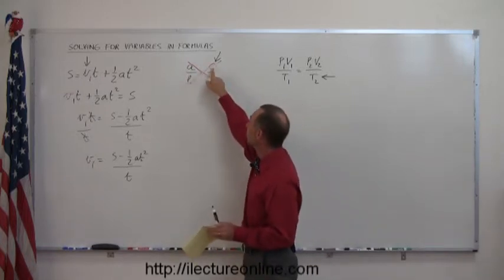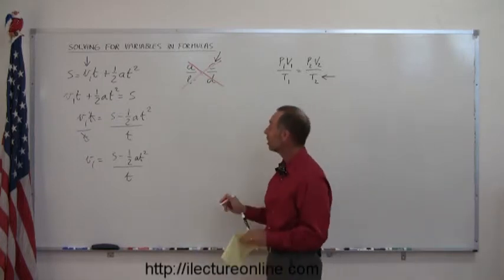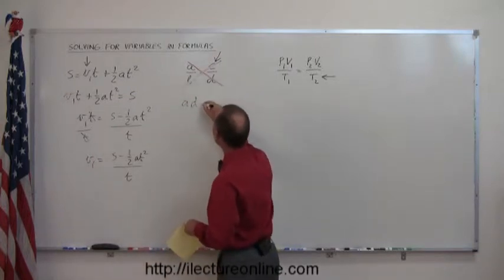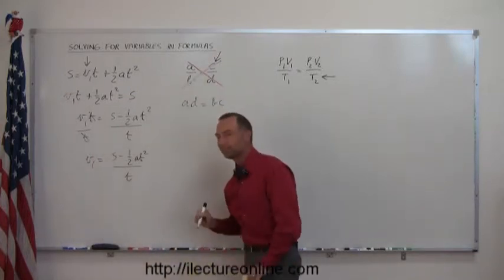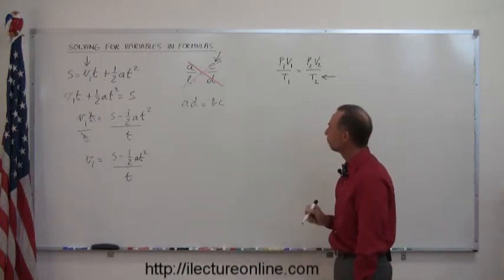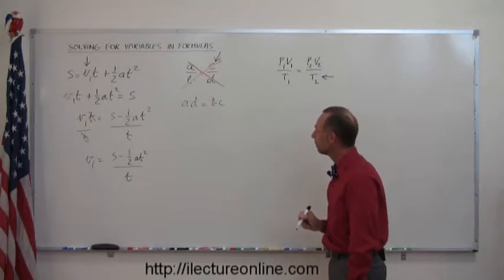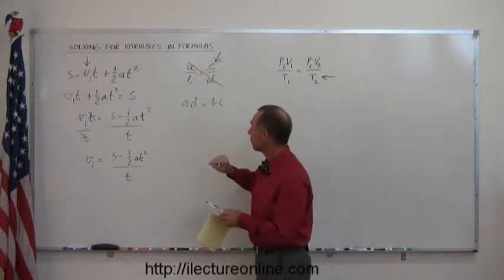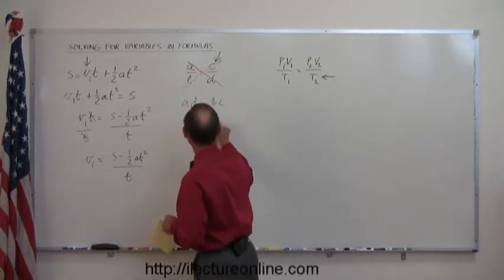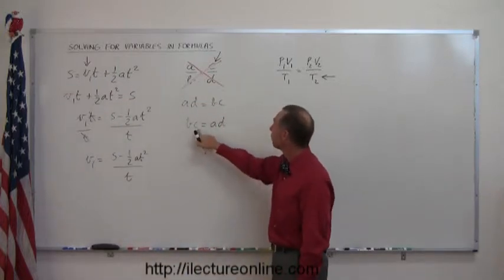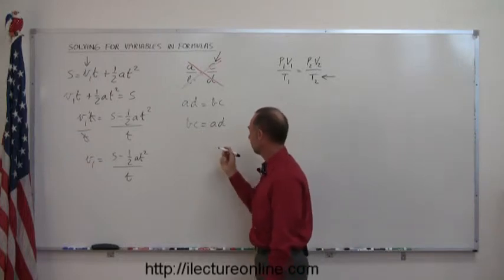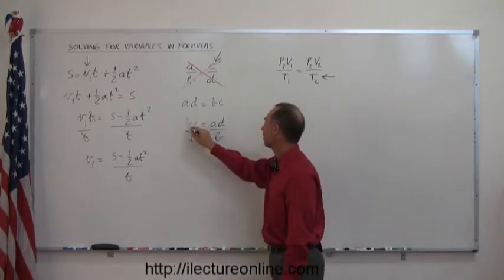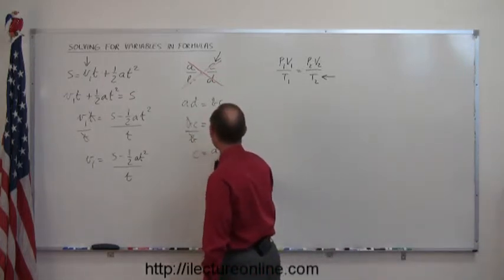I can move the d over here, I can move the c down there, I can move the b down there and nothing has changed. So I can write this as a times d by moving the d over here equals b times c. Now since I'm looking for c and it's now on the right side, I can flip the equation around and write this as bc equals a times d. The last step, since I'm looking for c, I divide both sides by b and now I have c equals a times d over b.